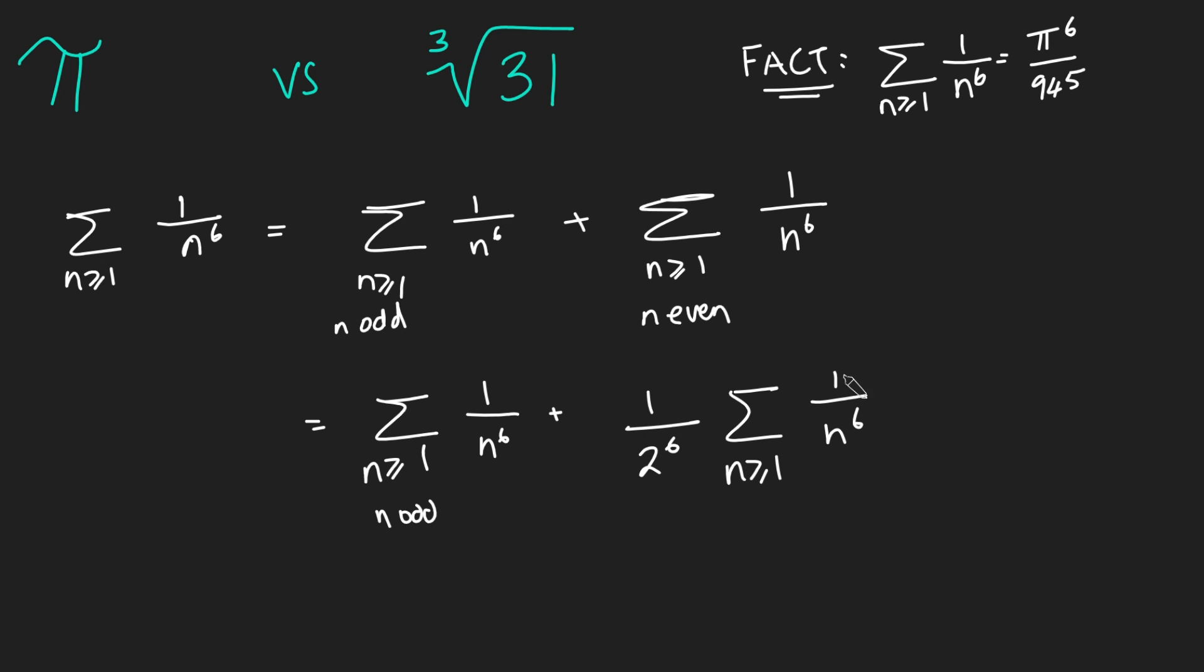So what exactly have I done here? Well, this guy here is just the same as 1 over 2 to the 6 plus 1 over 4 to the 6 plus 1 over 6 to the 6 and so on. And so I've just taken out a 1 over 2 to the 6 from everything. So this becomes 1 over 1 to the 6 plus 1 over 2 to the 6 plus 1 over 3 to the 6 and so on. And hence why I haven't put n odd or n even here. It's just all of the numbers to the power of 6.